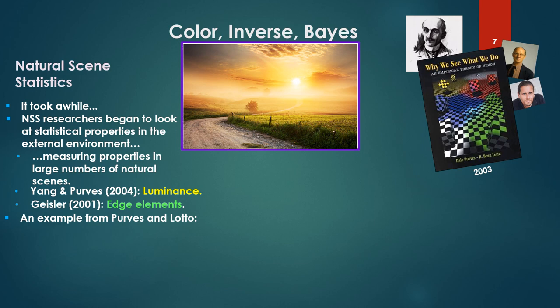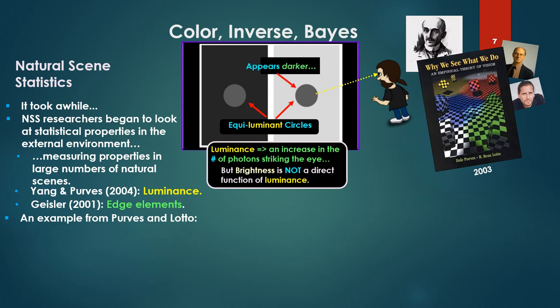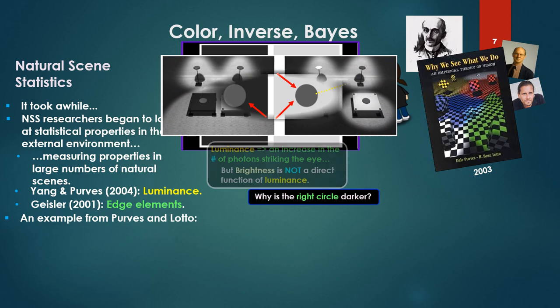An example from Purvis and Lotto in 2003, where we see what we do. Here we have looking at luminance. We have the two dots there. Luminance is an increase in the number of photons striking the eye. But brightness is rather famously not a direct function of luminance. In actuality, the two circles there are equiluminant, they're equiluminant circles. Yet the one on the right appears darker. Why is the right circle appearing darker?